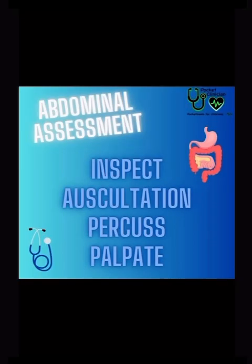The abdominal assessment consists of four basic components: inspection, auscultation, percussion, and palpation. It is important to begin with the general examination of the abdomen with the patient in a completely supine position. Changing the order of these assessment techniques can alter the frequency of bowel sounds and make your findings less accurate.